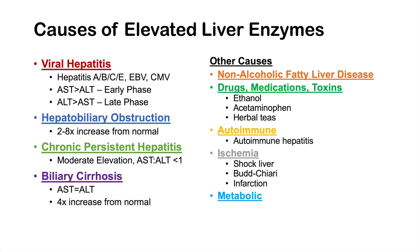Metabolic causes are another category, including Wilson's disease — where copper deposition in the liver leads to damage — and hemochromatosis, where iron deposition causes liver injury. To summarize, causes of elevated liver enzymes include viruses, obstruction, chronic persistent hepatitis, biliary cirrhosis, non-alcoholic fatty liver disease, drugs and toxins, autoimmune hepatitis, ischemic liver injury, and metabolic conditions.